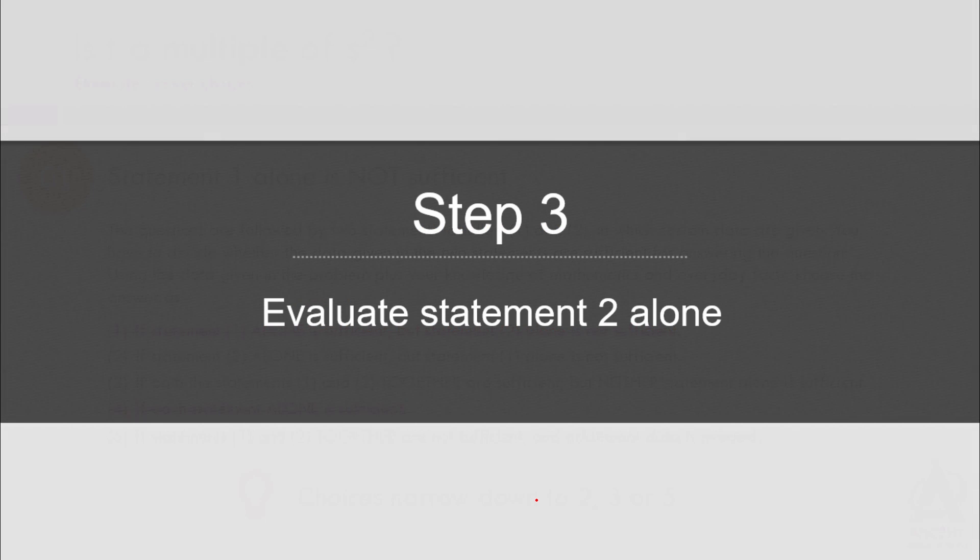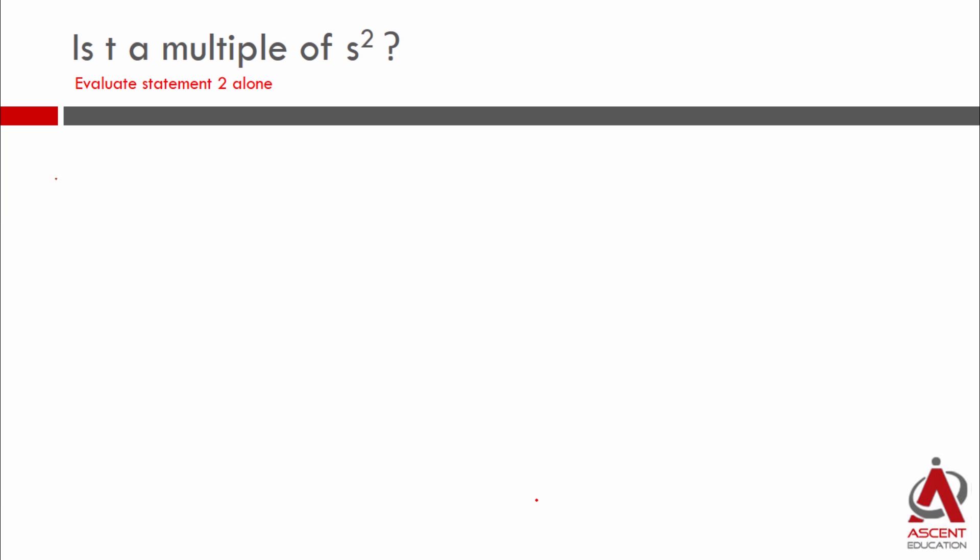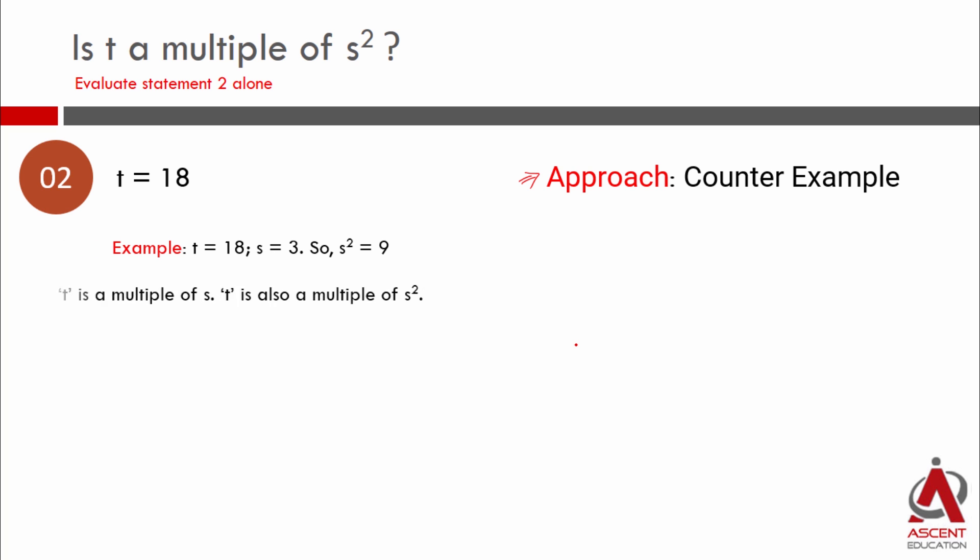Let's start by evaluating statement two alone. Statement two alone says t is equal to 18. Let's keep the approach simple. We'll go with a counter example. t is 18, s is a prime number. We'll try and see if we can get one case where it's yes and one case where it's no. Same process as statement one.